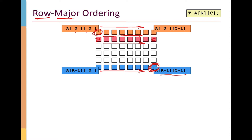Other languages, most notably Fortran, store arrays in column major order. The choice is somewhat arbitrary, but it's important to know that C uses row major order because this becomes very important when we start talking about how caching affects the performance of algorithms as they traverse arrays.